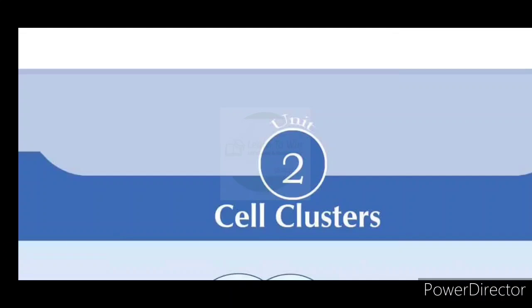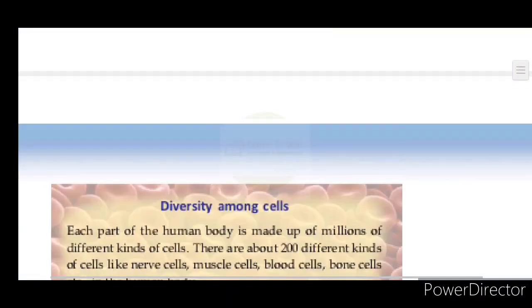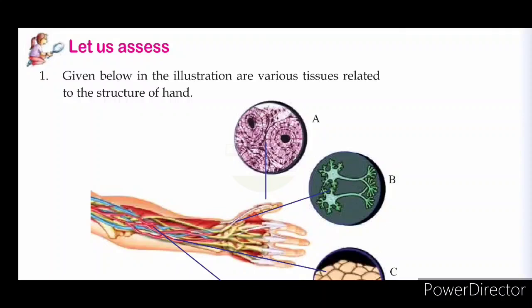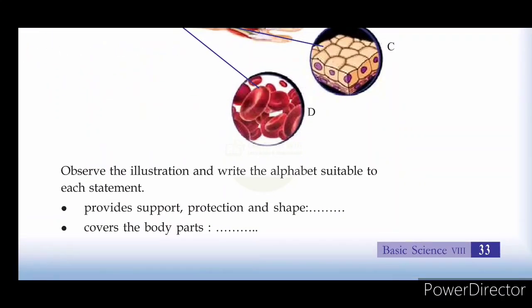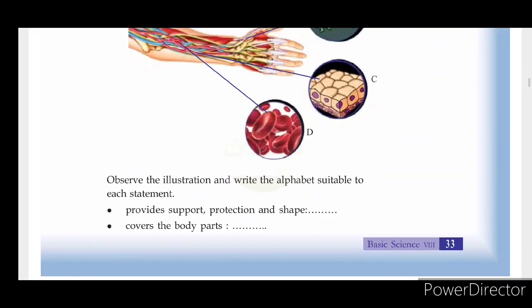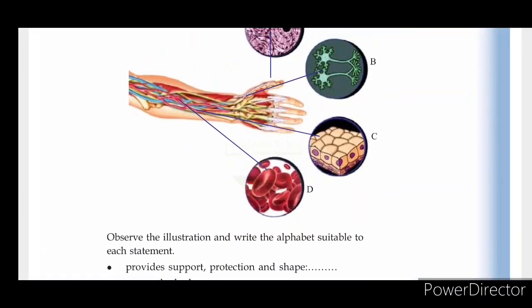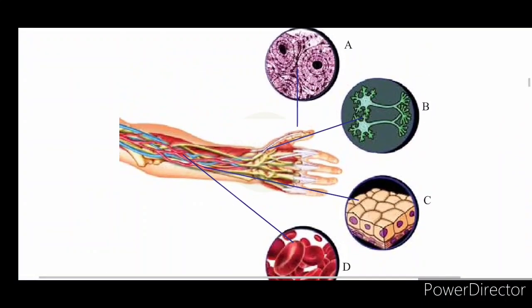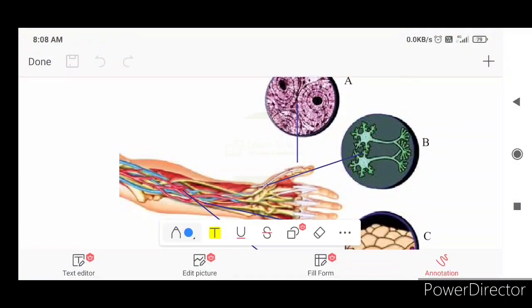Let us look at some important questions. The question is: given below in the illustration are various tissues related to the structure of the hand. Observe the illustration and write the alphabet suitable to each statement. What provides support, protection, and shape? That is muscle tissue. The answer is A.